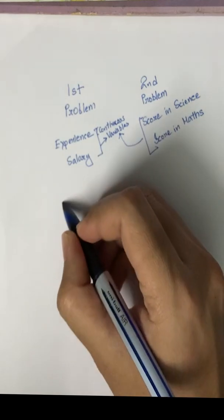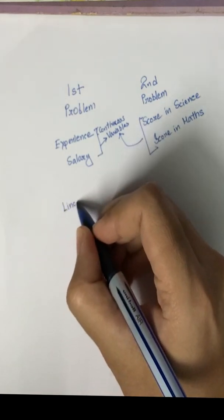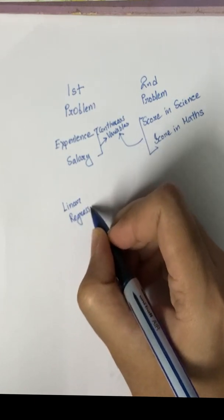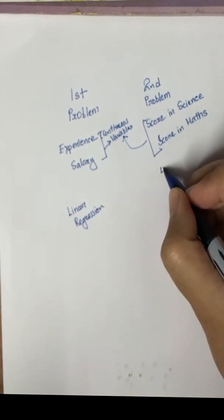So when we have two continuous variables and we want to find the relation in it, we generally use regression statements. So let's consider that we'll use regression, and in this case linear regression. And in this one also linear regression.